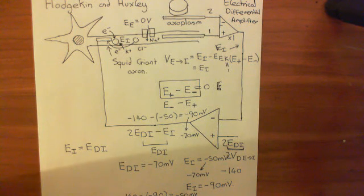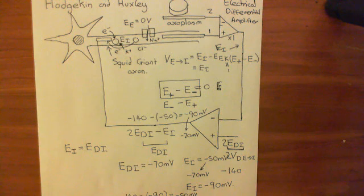We have looked at the way the voltage clamp works, and now we're going to see how we can use it to measure current moving across the cell membrane.